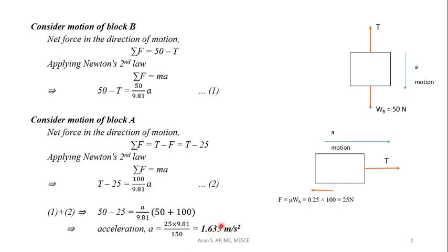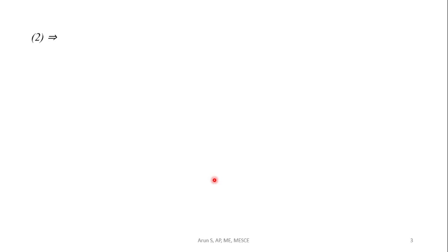Substituting this value of A in either equation number 1 or 2, we can find out the tension in the cable. After substituting in 2, we will get T equals 25 plus 100 by 9.81 into A. We can get tension to be 41.67 Newton.